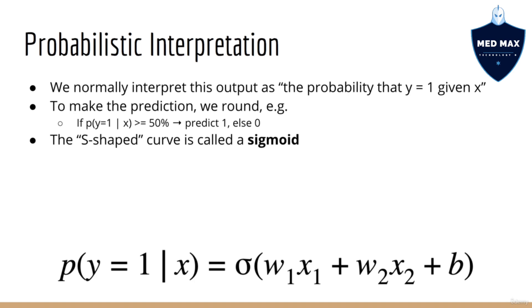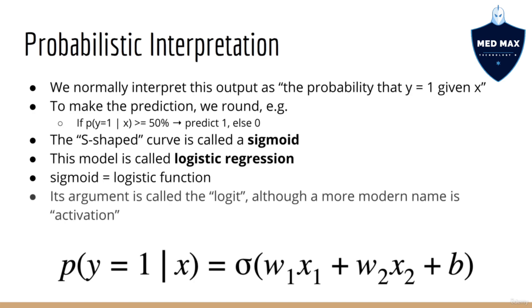As a side note, when we apply the sigmoid function on top of a linear function, we call this model logistic regression. This is because we also sometimes call the sigmoid function the logistic function, although this term is not really used too often these days. In addition, we also refer to the argument into the logistic function as the logit, but a more current and generic term for this is activation.